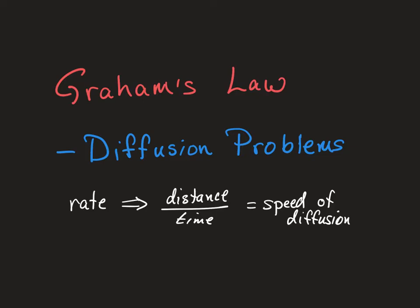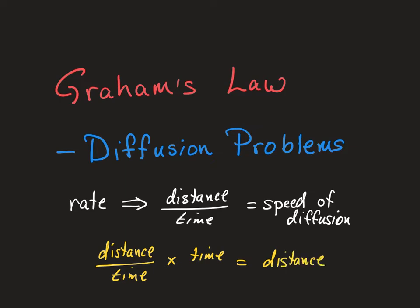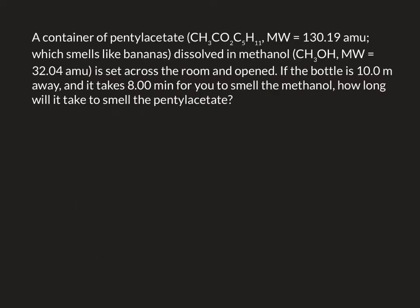Since we're using distance over time, if we take that speed in distance over time and we know something about the time interval, we can get the distance traveled. And so it adds an element of distance to the typical Graham's Law problem.